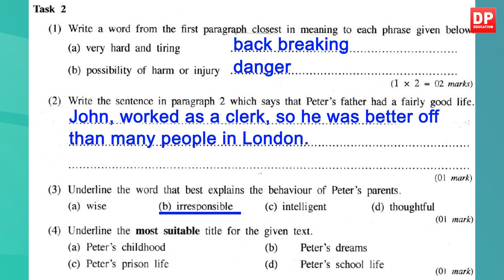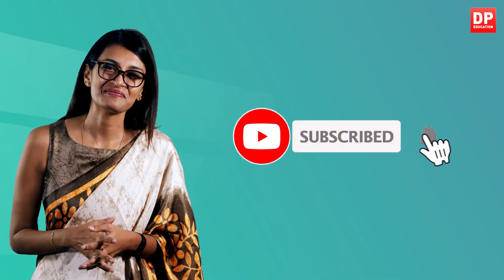The fourth question asks you to underline the most suitable title for the given text — Peter's Childhood, Peter's Dreams, Peter's Prison Life, or Peter's School Life. The answer is 'Peter's Childhood.' That brings to an end the session on Part 2 of Paper 2 of the 2019 O-level paper. The next session will discuss Text 16, which is essay writing and composition. If you found this useful, please subscribe to our channel. Have a great day.